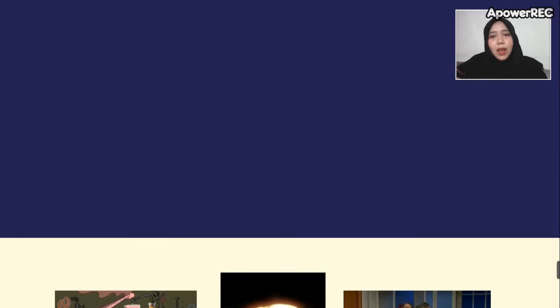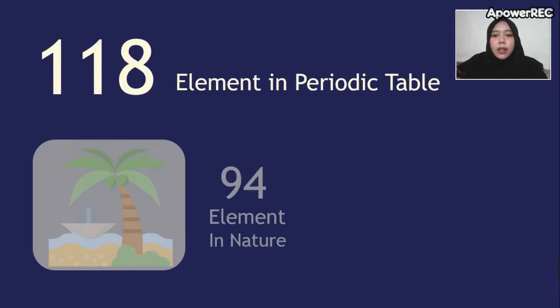The periodic table contains 118 elements, and 94 of them can be found in nature while the rest are obtained in laboratories. These numbers are still growing because in the near future, many scientists may discover other elements — and maybe you and I can discover new elements in the future too.